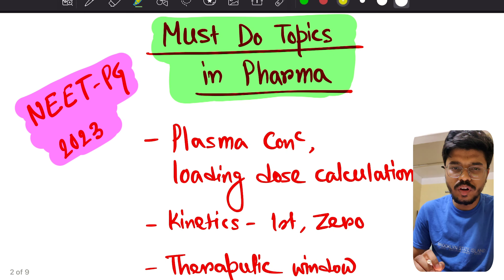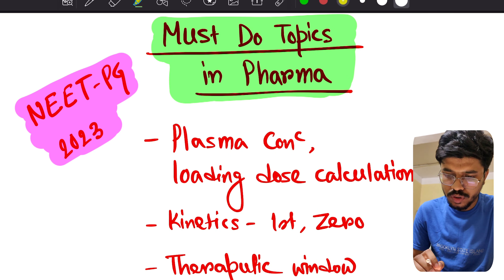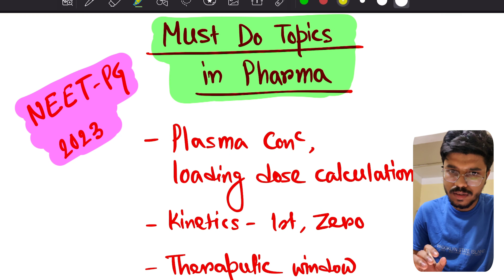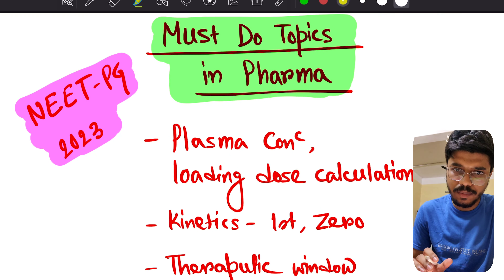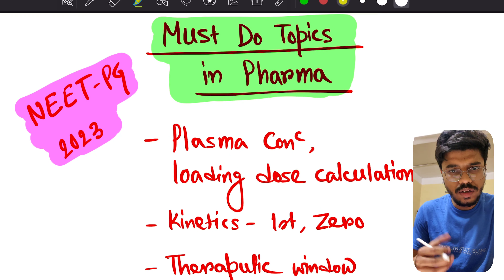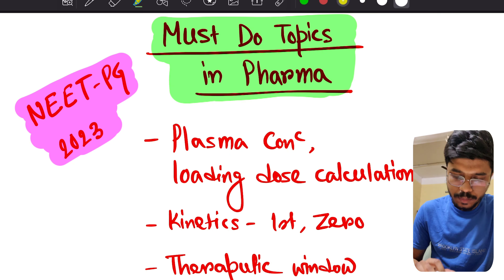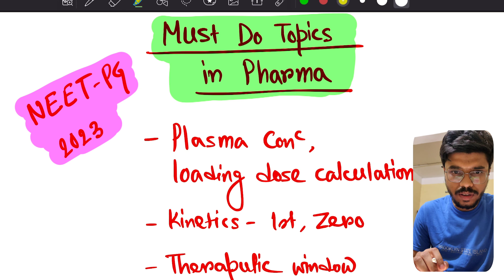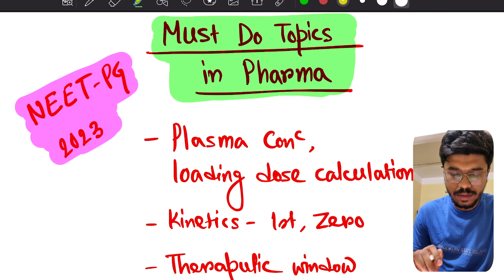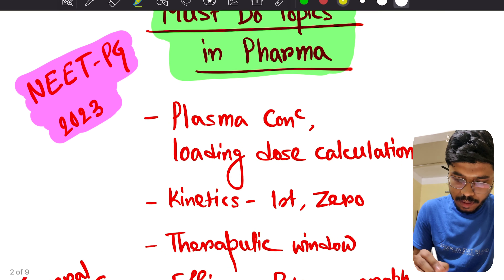Hi guys, in this video we talk about must-do topics in pharma. Today we discuss ANS, CVS, and general pharma. These are must-do topics you cannot ignore before the exam. You can check whether you have covered these topics or not — if not, please cover them.